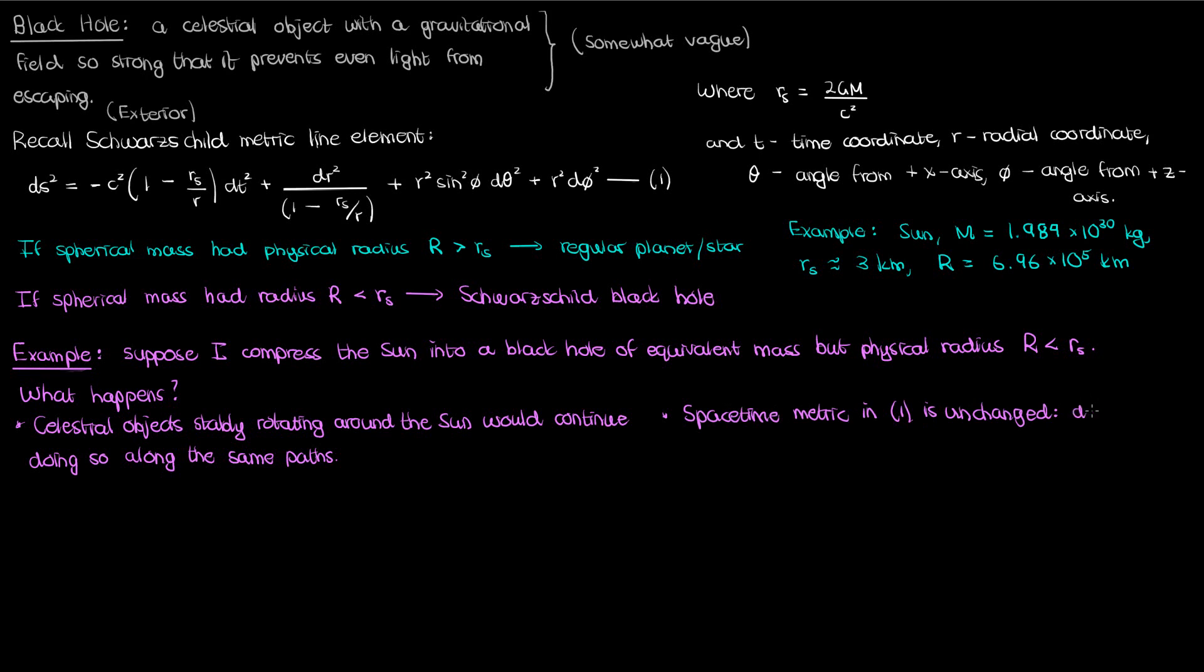You can see from equation 1 that the spacetime metric doesn't really care about the physical radius of my object of mass m, it really only cares about the mass, that's in the r sub s term. And because of this, particle trajectories outside my Sun black hole are unchanged. My particles are still going to follow the same geodesics because I haven't actually changed the properties of the spacetime surface outside the Sun black hole.